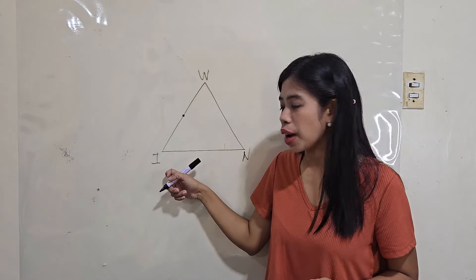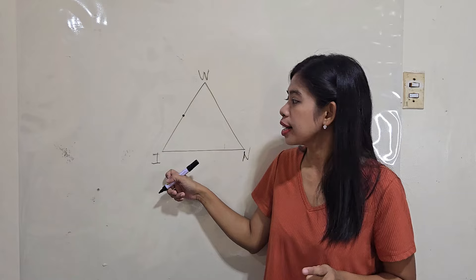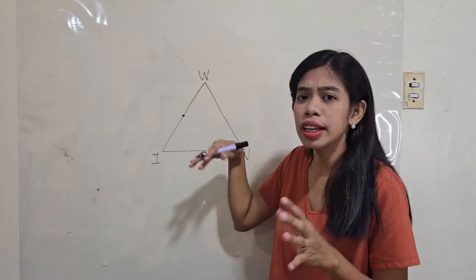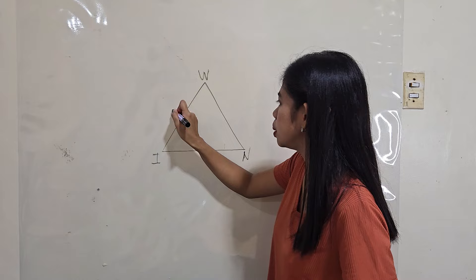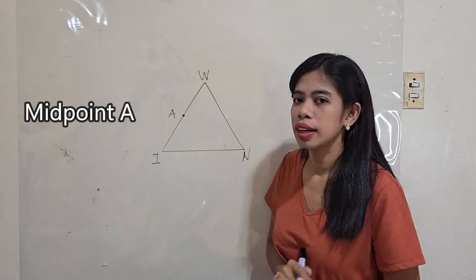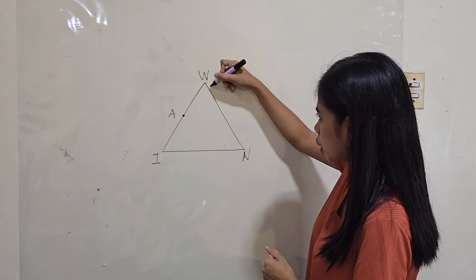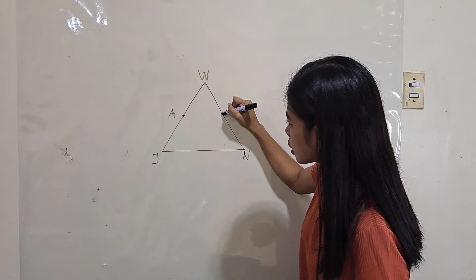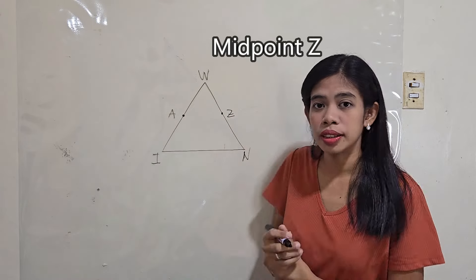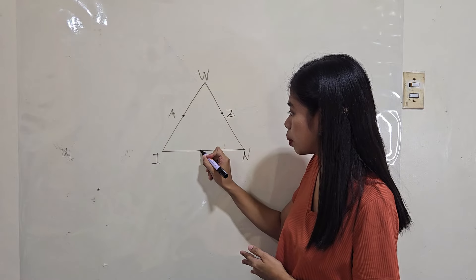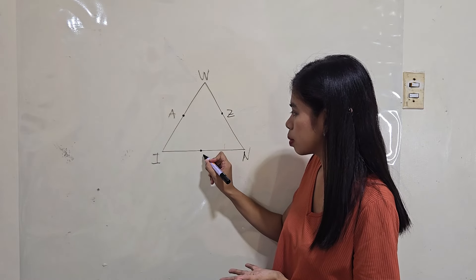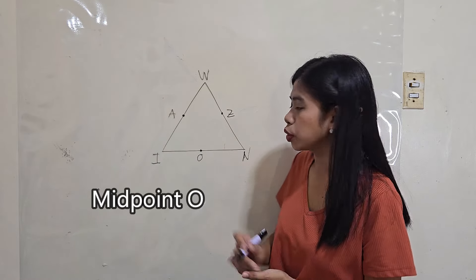So, suppose this is segment WI or side WI, the midpoint can be named any capital letter. Let's say this is midpoint A, and the midpoint of side WN is midpoint Z. Actually, side IN also has a midpoint. We can name this as midpoint O.